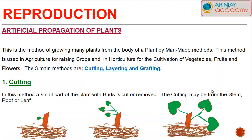Artificial propagation of plants is a method by which many plants are produced from the body of a plant by man-made methods, creating a new plant that replicates the parent plant. This method is mainly used in agriculture for raising crops and in horticulture for the cultivation of vegetables, fruits and flowers. The three main types or methods are cutting, layering and grafting.